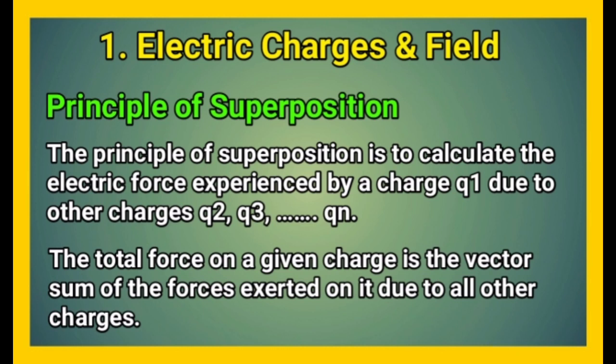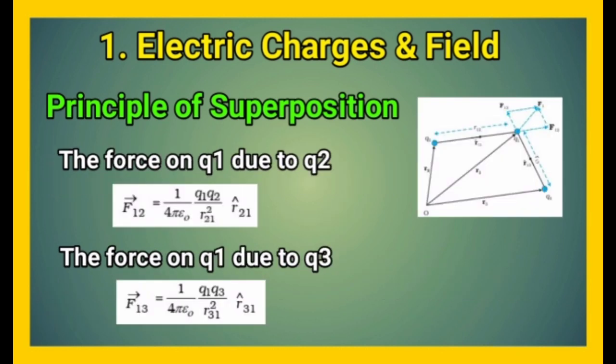The total force on a given charge is the vector sum of the forces exerted on it due to all other charges. As you can see in the diagram, the force on charge Q1 due to Q2 is given